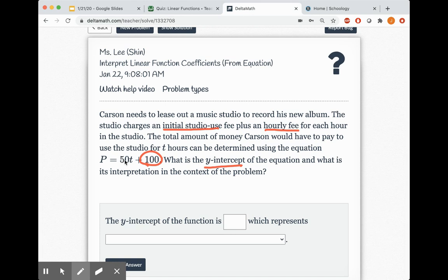So if you take a look at this equation here, you can see that 50 is being multiplied by T. When it's being multiplied by T, you can tell, because T represents hours, that it means you have to pay $50 per hour. And what does that tell us about the 100? That it means that it's the initial studio use fee.